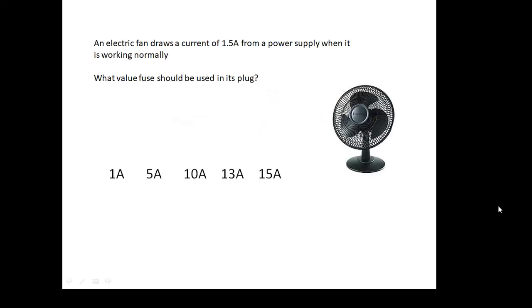Look at this: an electric fan draws a current of 1.5 amps when it's working normally. So what value of fuse should be used in its plug? Well, if it's working normally at 1.5 amps, then we should use a 5 amp fuse. If we put a 1 amp fuse in the plug, then every time we plugged in the fan, the fuse would blow even if there was nothing wrong. If we put a 10 amp fuse in, then there might be a problem—the thing could be on fire, but the fuse doesn't blow. So we want the value of the fuse which is just greater than the current that would normally be used.